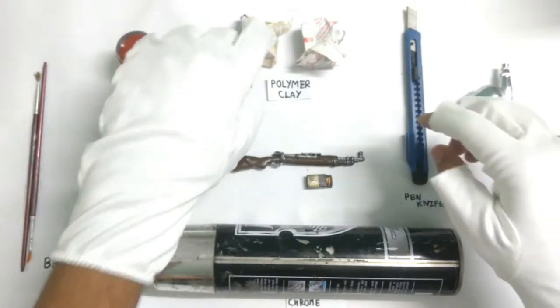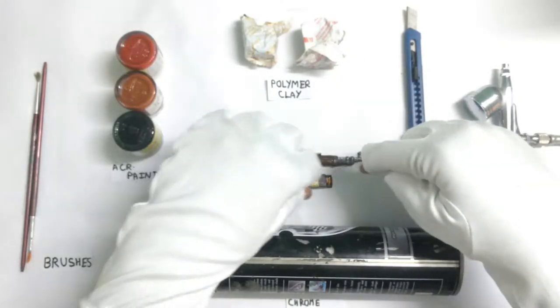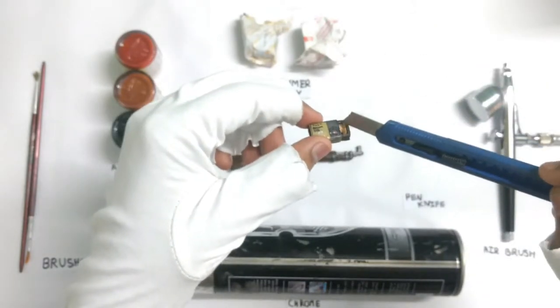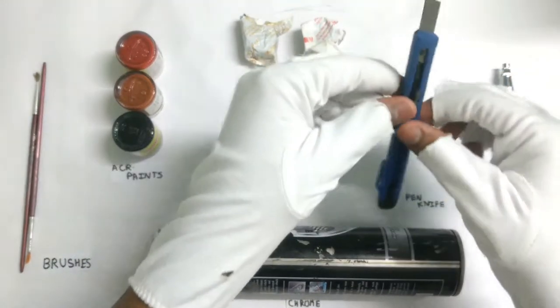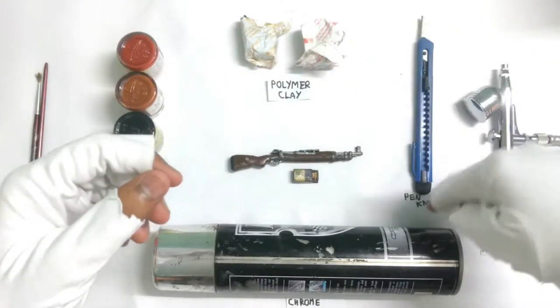The first thing is polymer clay, obviously for the whole thing. I made the whole thing with polymer clay and these bullets you see are also made from the same polymer clay.